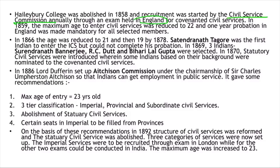However, the exam was held only in England in 1859. For the covenanted civil services, after being selected it was compulsory to complete one year of probation in England. In 1859 the maximum age was reduced, and in 1866 it was reduced first to 21 years. In 1878, the first Indian attempted to enter the Indian Civil Services but could not complete the mandatory probation, so he couldn't join.